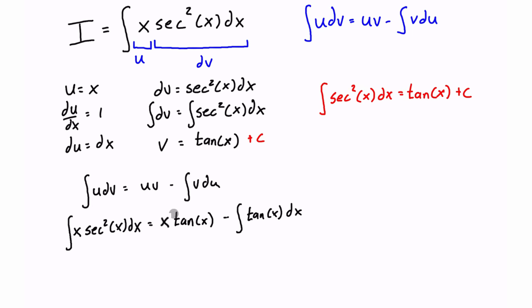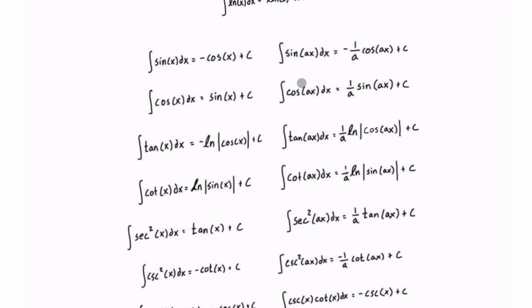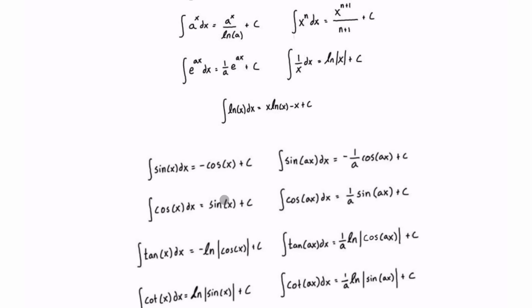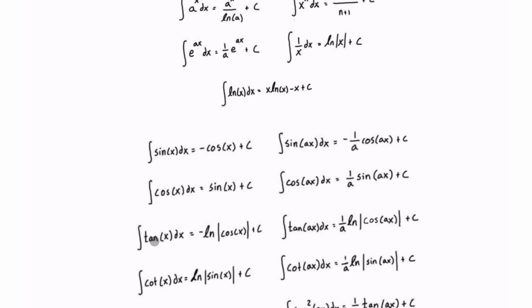So now we have another integral that we have to solve, the integral of tan of x dx. But again, we're going to consult our table of integrals. And we're just going to look around in our table and see if we can find tan of x dx, and it's right here. The integral of tan x dx is equal to negative ln of cos of x plus c.